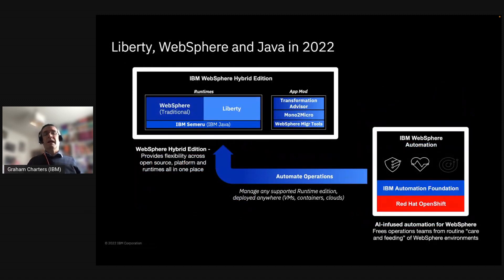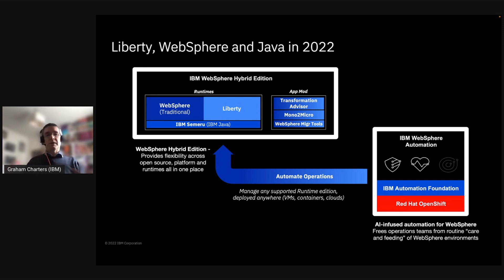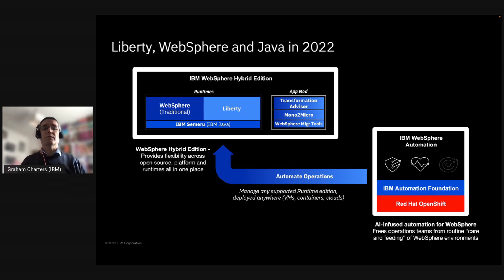Through Hybrid Edition and Cloud Pak for Applications, we've enabled those three strategies. We have the traditional WebSphere entitlement, the Liberty entitlement, support for the underlying Java, and the modernization tooling. We have Transformation Advisor for analyzing existing applications and identifying which target runtimes are most appropriate and what work you need to do to move between runtimes. We have the WebSphere Application Migration Tools — Eclipse plugins to help with any code changes needed. And then Mono to Micro, which is unique to Hybrid Edition — a tool that analyzes existing applications, helps understand their structure, and makes recommendations for how to break a monolithic application into microservices while generating starter code.